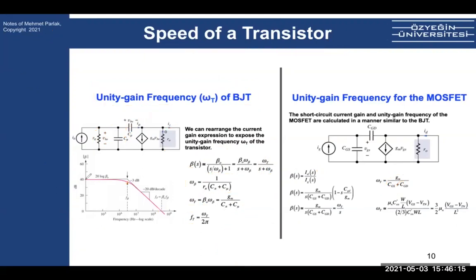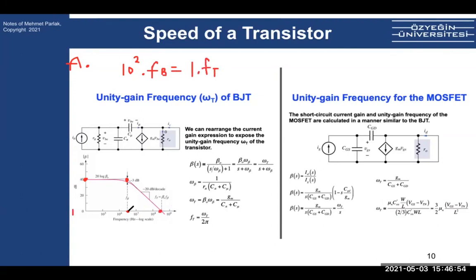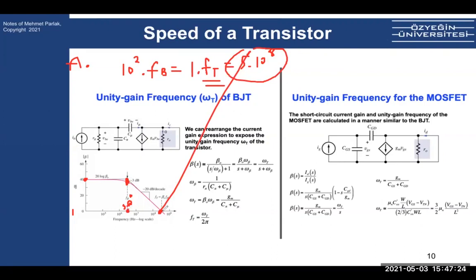There is a useful Bode plot trick: gain (in decimal, not dB) times bandwidth is constant and equals gain × frequency at any other point on a −20 dB/decade slope. For example, a gain of 40 dB is 10² = 100 in decimal. So 100 × F_B = 1 × F_T. If F_B = 5 × 10⁶ Hz, then F_T = 5 × 10⁸ Hz. This only works for functions with a 20 dB/decade slope.